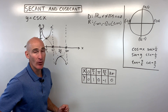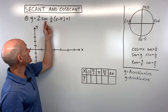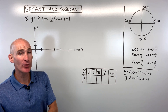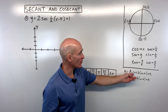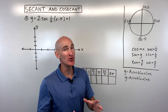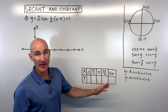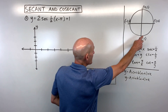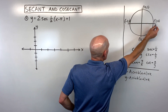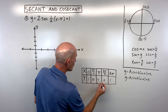For the first example, we're going to graph y = 2 sec(½(x − π)) + 1. We'll first graph a cosine in the form a·cos(b(x − h)) + k and use that as a template. We go to our table and put in the basic cosine values from the unit circle: 1, 0, −1, 0, 1.